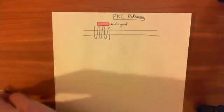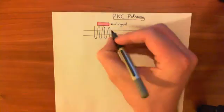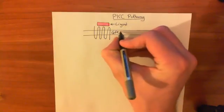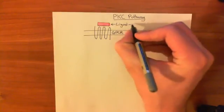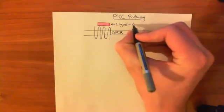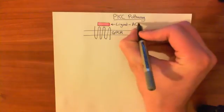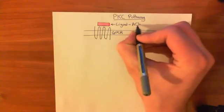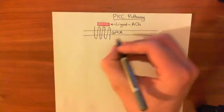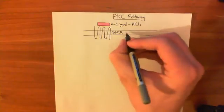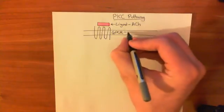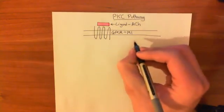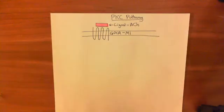If you want to have a concrete example in mind, you can think of the ligand as being acetylcholine, which is often abbreviated ACh — A for acetyl and CH for choline. And you can think of this GPCR as being the muscarinic 1 acetylcholine receptor.